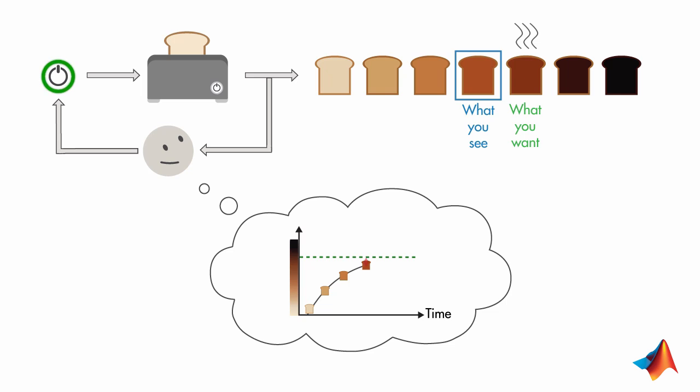When what you see overlaps with what you want, the error becomes zero. Your yummy toast is ready, so you turn off the toaster.